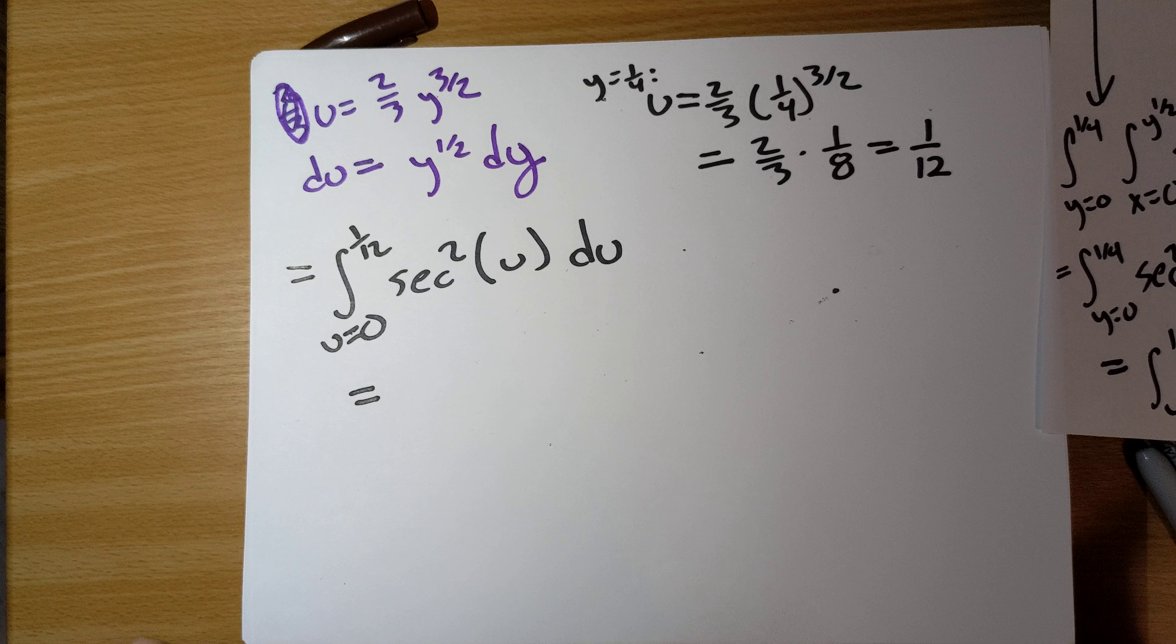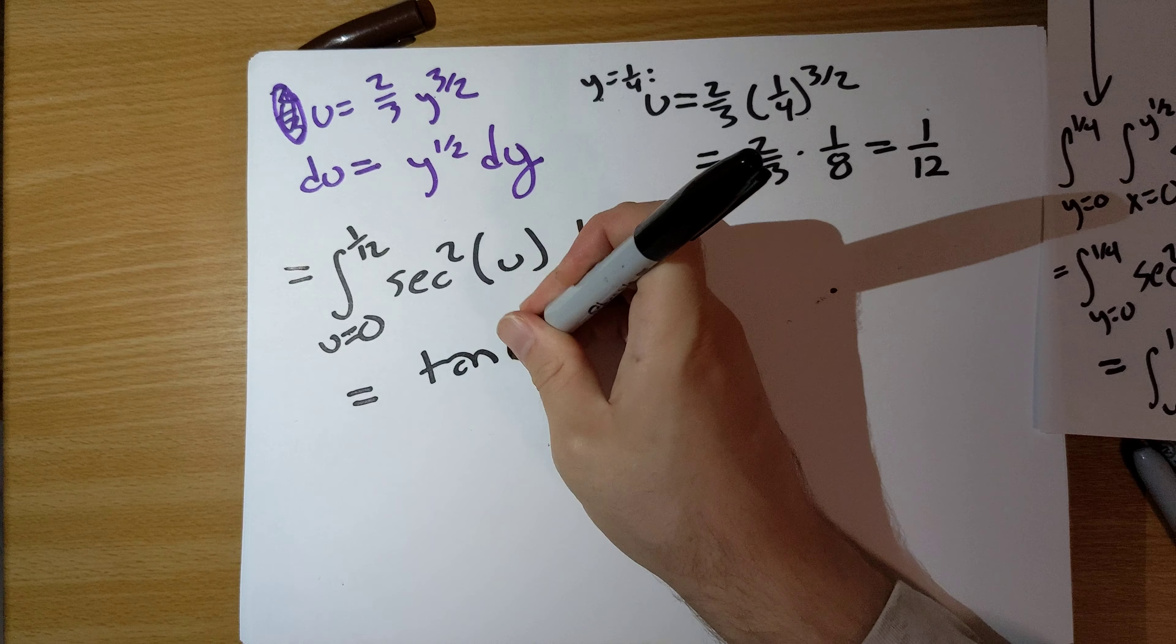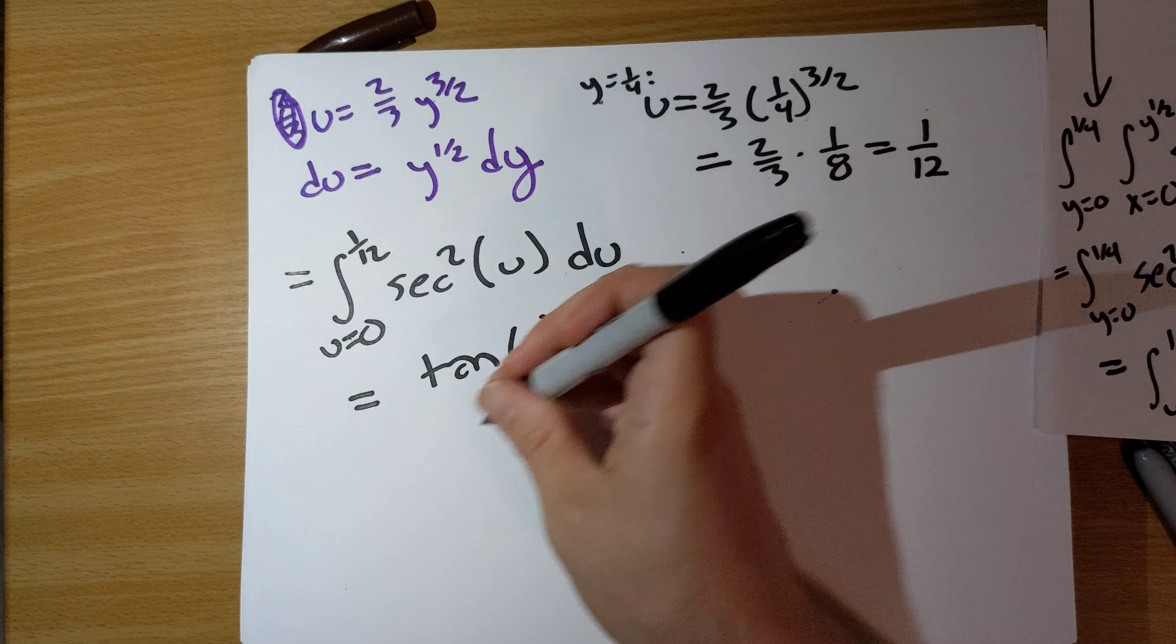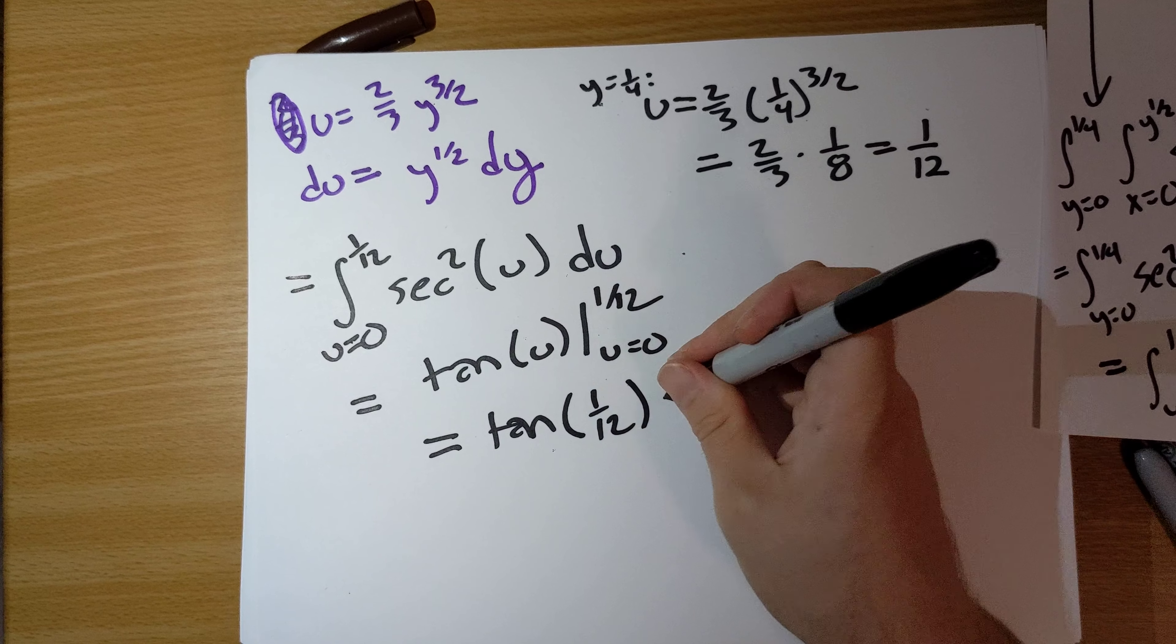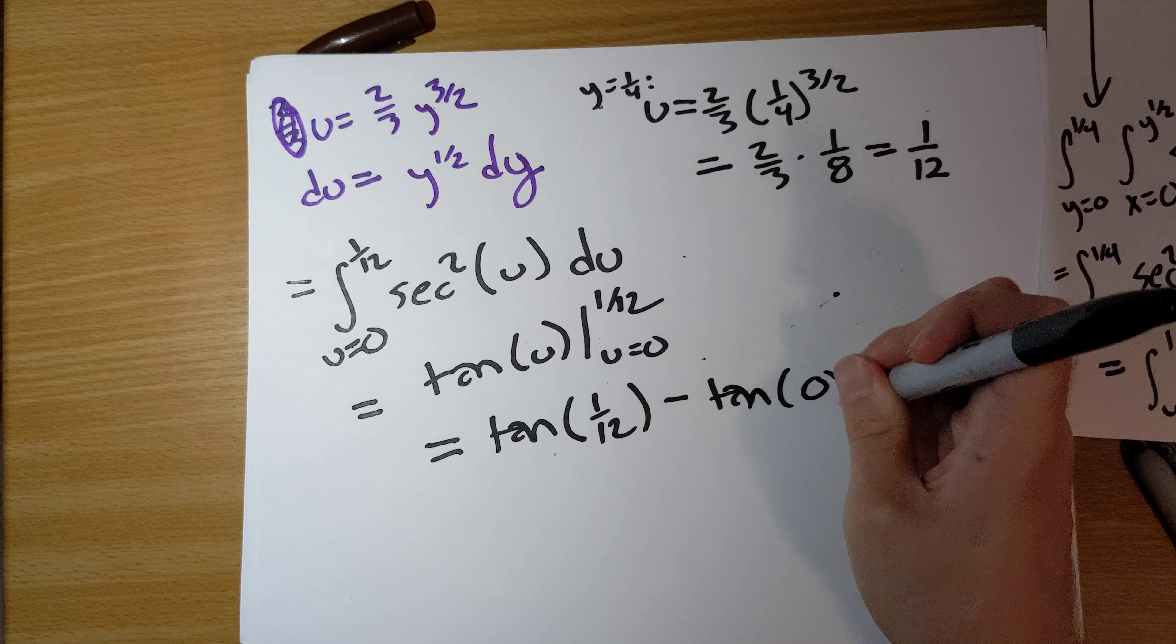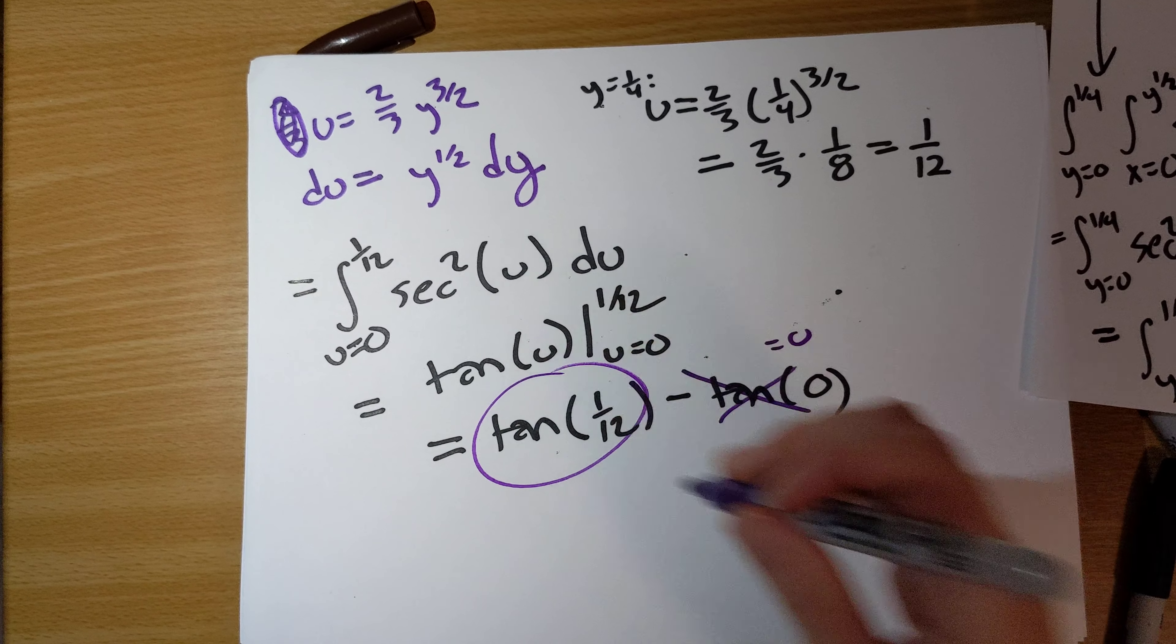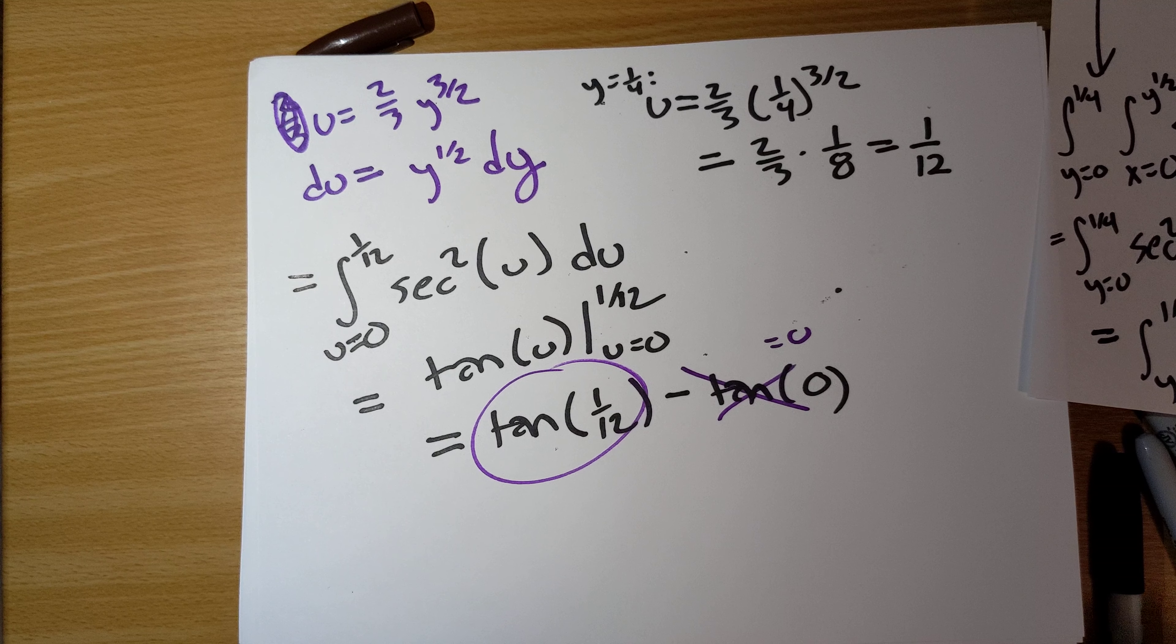What's the antiderivative of secant squared u? That's just going to be tangent of u. Plug in u is 0 and u is 1/12. We have tangent of 1/12 minus tangent of 0. Of course, tangent of 0 is equal to 0. So our final answer is tangent of 1/12.